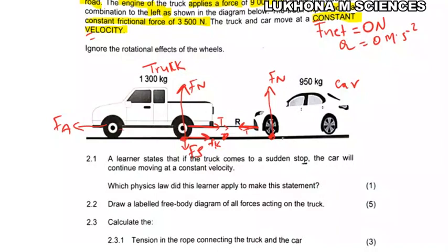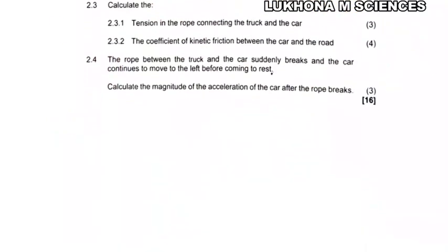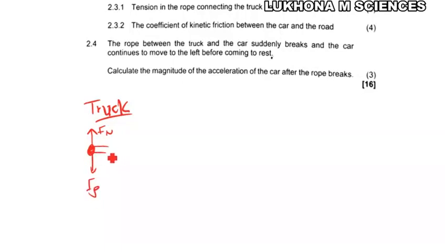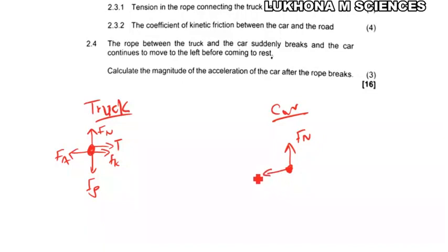For the car's free body diagram: normal force, frictional force, fg, and tension — four forces total. For the truck's free body diagram: normal force, fg, tension and friction on one side, and the applied engine force on the other. For the car: normal force, tension, fg, and kinetic friction fk.